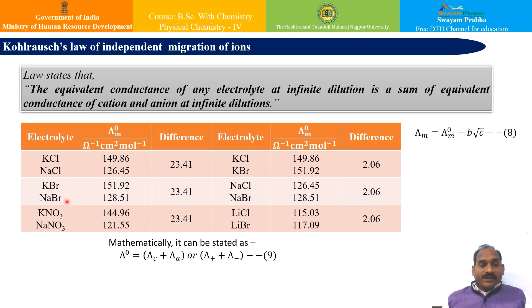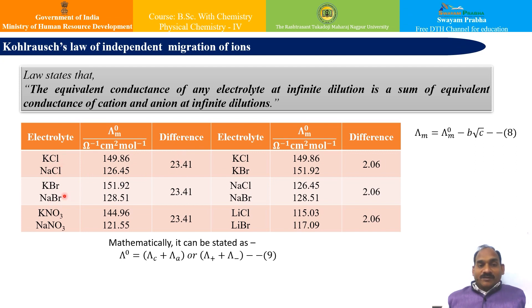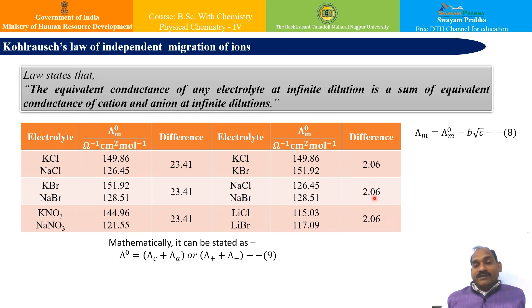The Kohlrausch law states that the equivalent conductance of any electrolyte at infinite dilution is the sum of the equivalent conductances of the cation and anion at infinite dilution. At infinite dilution, all electrolytes are completely dissociated and all interionic effects disappear, so each ion migrates independently and contributes a definite share to the total molar conductivity depending only on its own nature. Mathematically: Λ°m = λ°(cation) + λ°(anion). Kohlrausch confirmed this by studying pairs of strong electrolytes with common ions such as KCl, NaCl, KBr, NaBr, KNO₃, NaNO₃, and observing that the differences in conductances of pairs are equal, confirming each ion contributes independently.